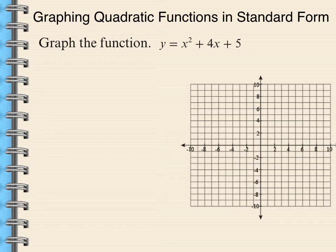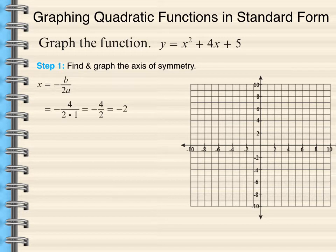Therefore, there will be a minimum value of my quadratic function. Step number one is to find and graph the axis of symmetry. And the equation for the axis of symmetry is a good one to commit to memory because we use it a lot. It's x equals negative b over 2a.